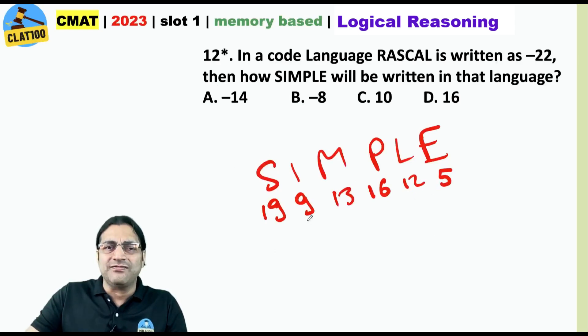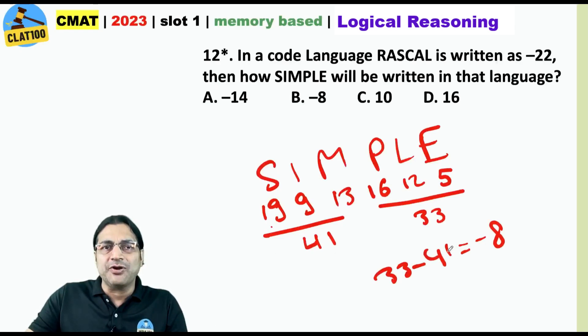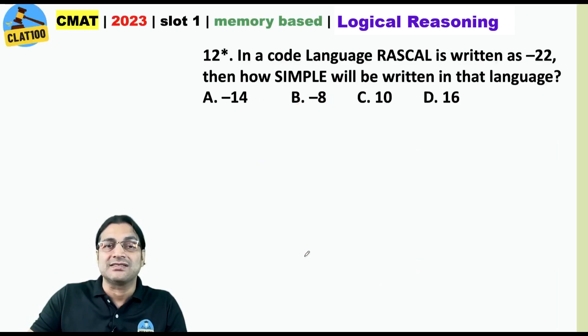If we go by the first logic 19 and 9, 28 and 13, this is 41. What about this one? 28 plus 5, 33. So, going by my logic 33 minus 41 is minus 8. Do we have an option for this? Oh, yes. We have an option for this. Let us do simple again.